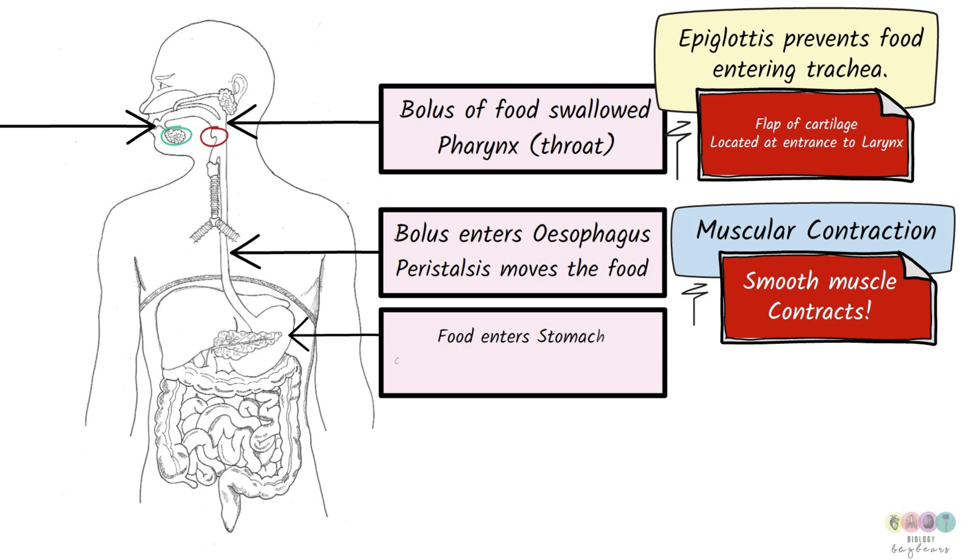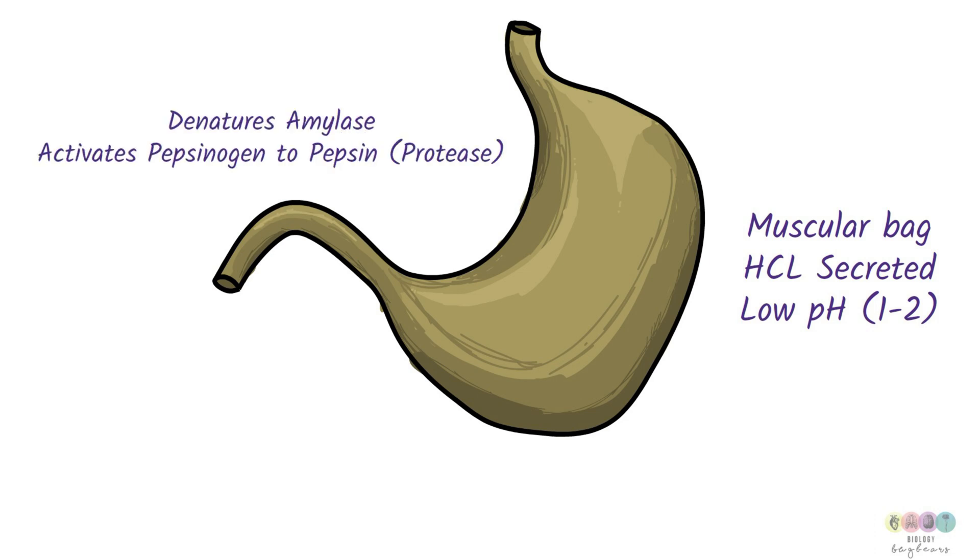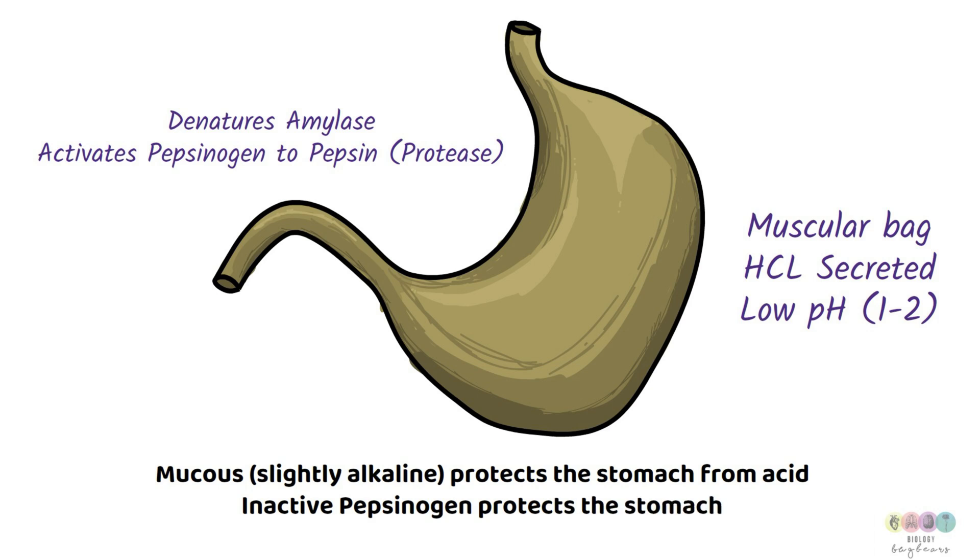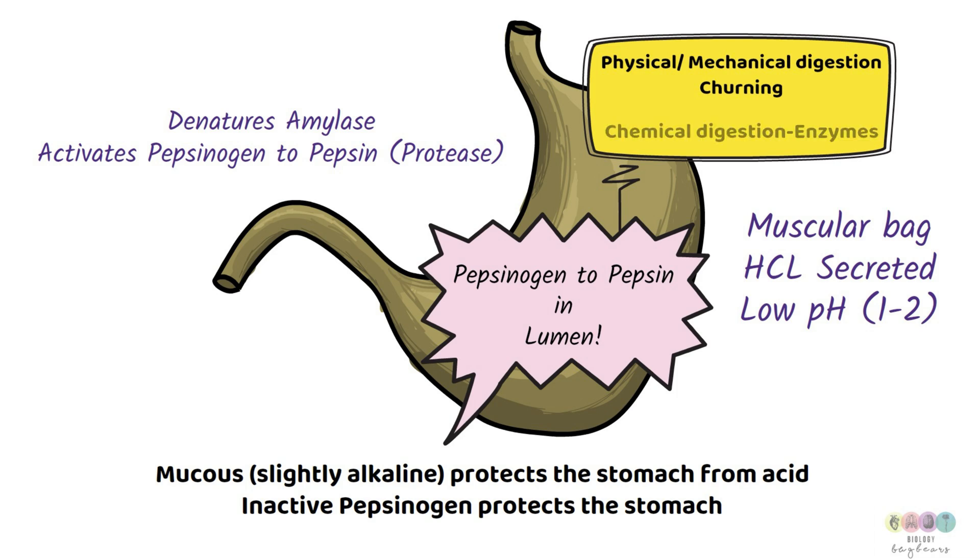Food will enter the stomach when the cardiac sphincter muscle relaxes. The stomach is a J-shaped muscular bag. Cells in the wall of the stomach secrete hydrochloric acid. So the pH within the stomach is very low. Approximately between 1 and 2. This low pH denatures the amylase produced in the salivary glands. And it also activates pepsinogen to pepsin, that protease. There are cells in the stomach which also produce mucus. Slightly alkali mucus. And this protects the stomach from the acid. And also another protective feature is that inactive pepsinogen only gets activated in the lumen of the stomach when it mixes with the acid away from the wall.